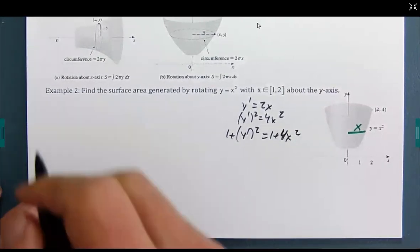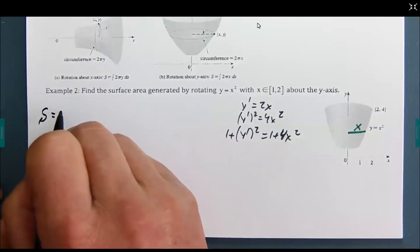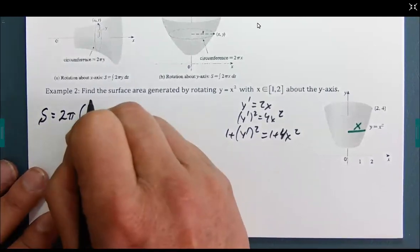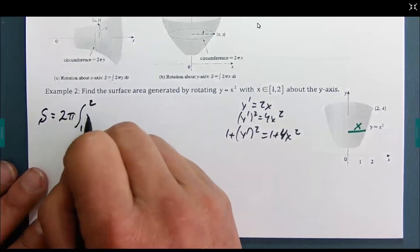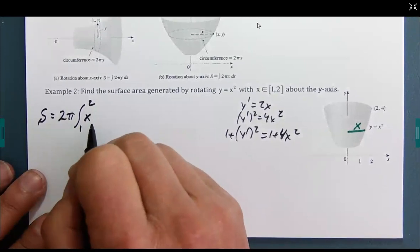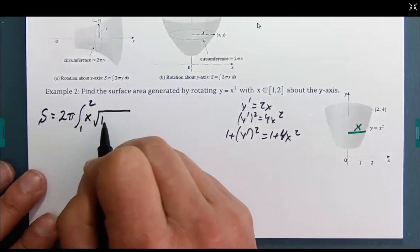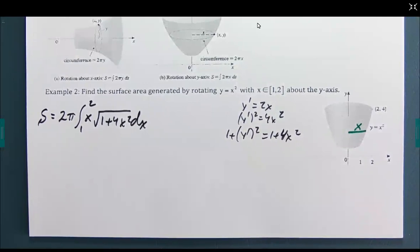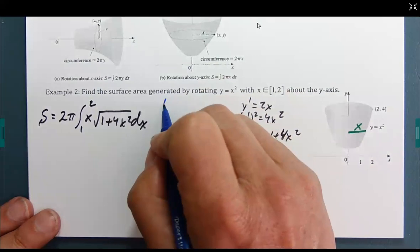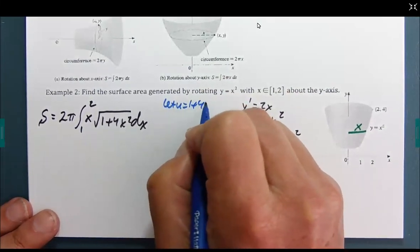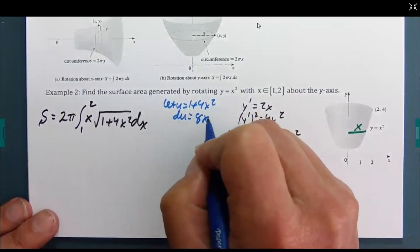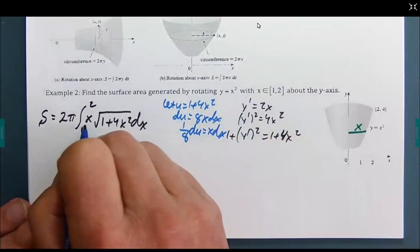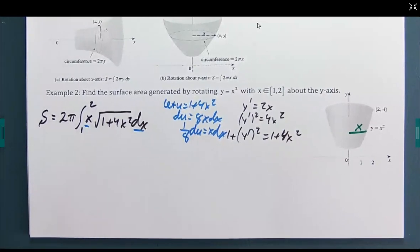So, we end up with a surface area of 2π times x. And we are going from 1 to 2. Again, these are x values. So, everything needs to be in terms of x. My radius is x times the square root 1 plus 4x² dx. And we can see that we have a little u substitution situation going on.